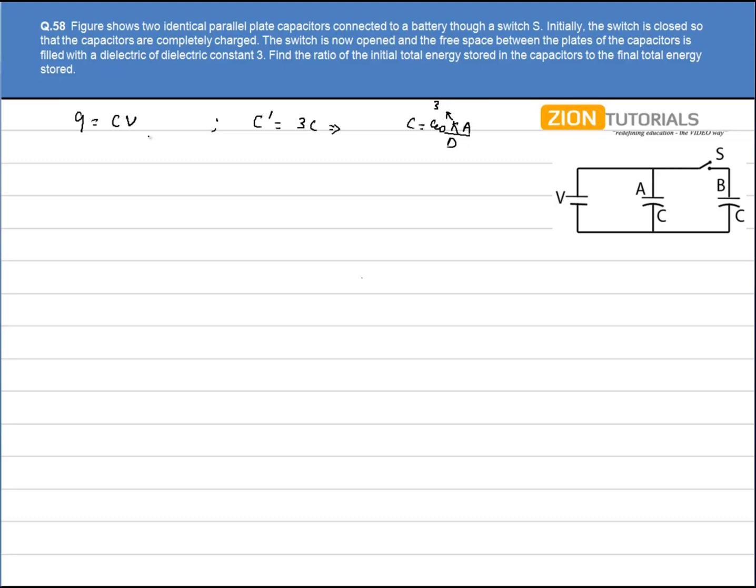Now one thing to note is we have to calculate the ratio of initial total energy to the final total energy. Initial total energy can be easily found out. Initial energy will be energy of A plus energy of B. So it will be equal to half CV squared plus half CV squared. That is CV squared.